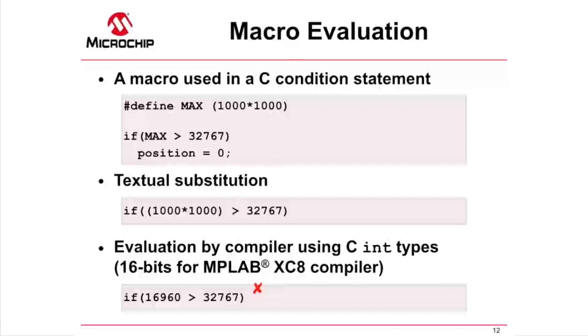In this example, the compiler will evaluate the controlling expression. The constant 1000 will have an int type. If this code was being compiled using MPLAB XC8, which has an int size of 16 bits, the multiplication will also be performed as a 16-bit operation. The multiplication will overflow, and produce the result 16,960, which is less than 32,767. The conditional controlling expression in this instance is false.